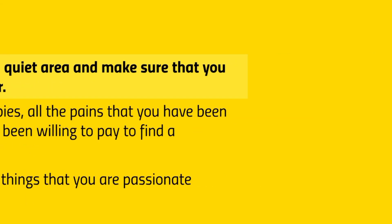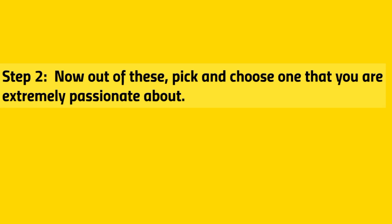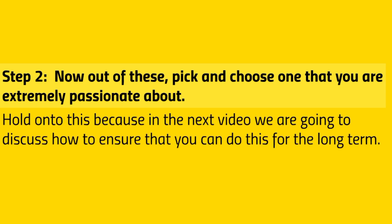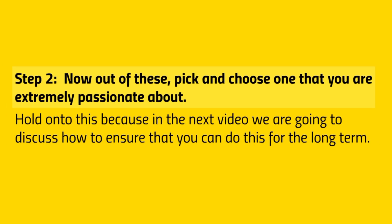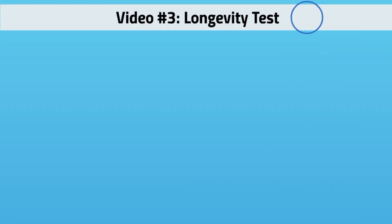Think about things you're passionate about, and feel free to pause and do this exercise now. Once done, step two is to pick the ones you're extremely passionate about from your list. In the next video we'll discuss how to ensure you can do this long-term by running it through the longevity test.